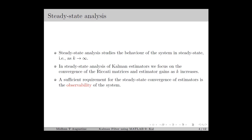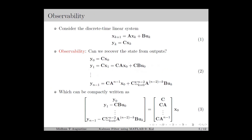In general, a sufficient requirement for the steady state convergence of estimates is the observability of the system. Observability can be considered as the ability to reconstruct the states from the output measurements, so it depends on the dynamical system and the sensors that we are using.